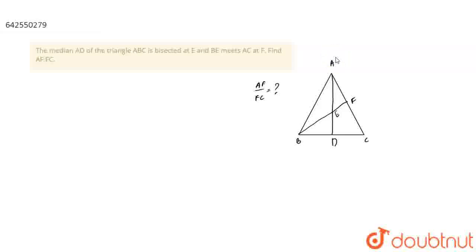If we suppose A as origin, we will have B as B vector, C as C vector. Now if we find point D, since AD is the median, D is the midpoint of BC, so D will be B vector plus C vector by 2. Similarly, if we find E, since E bisects AD, we will have E as B vector plus C vector upon 4.